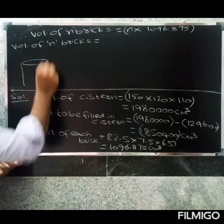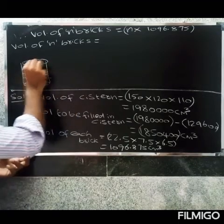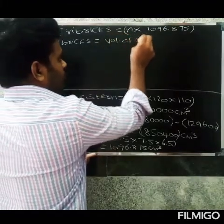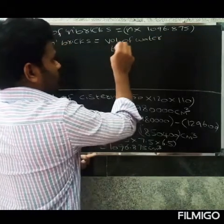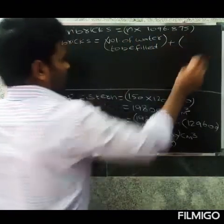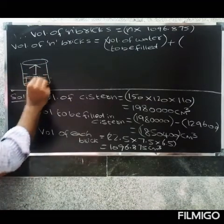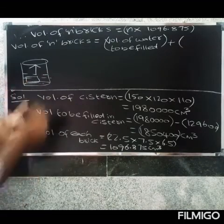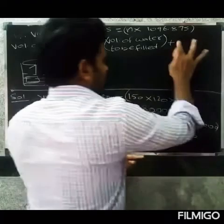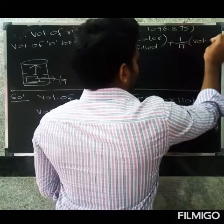Volume of n bricks equals volume of water to be filled plus one-seventeenth into volume of each brick. This accounts for the water absorbed and the space occupied by the bricks.